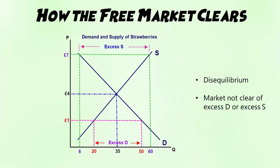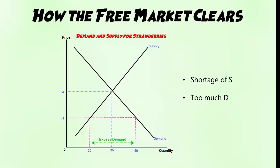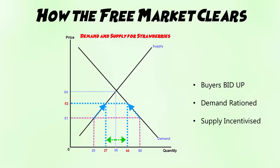To look at how the free market clears, remember that we start with a position of disequilibrium where the market isn't clear — either excess demand or excess supply. For excess demand, there is too much demand at a given price, here £1, compared to the amount of supply at that price. In other words, there is a shortage of supply compared to demand. According to theory, the free market through the price mechanism will then clear this excess demand, and this happens by buyers bidding each other up in order to try and get the good or service.